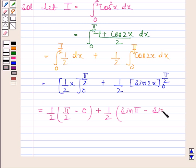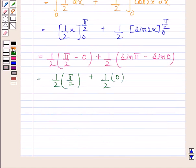This is equal to 1 by 2 into pi by 2 plus 1 by 2 into 0, and this is equal to pi by 4.